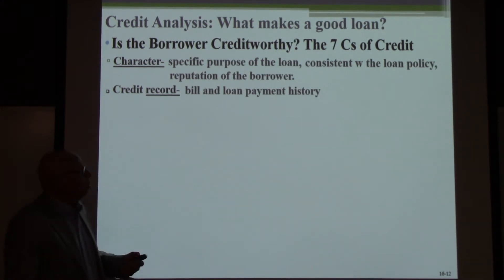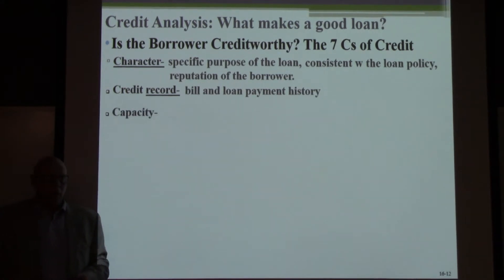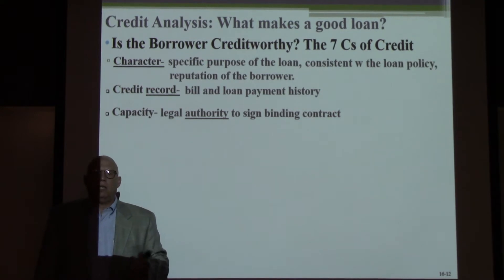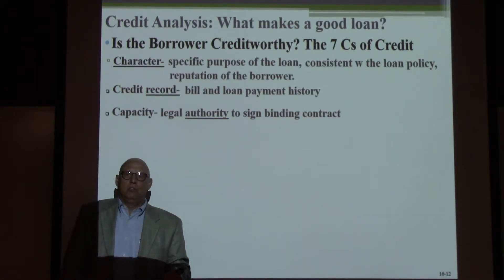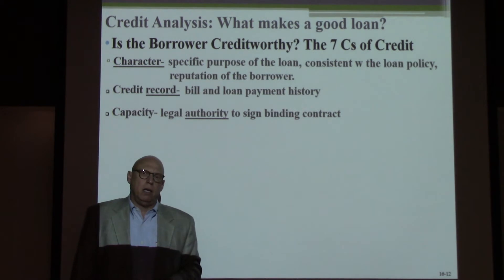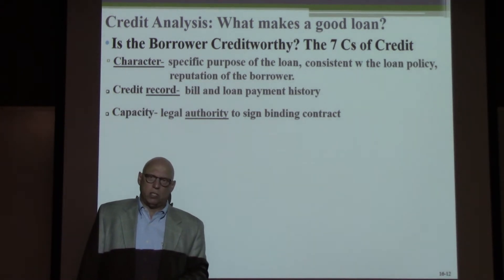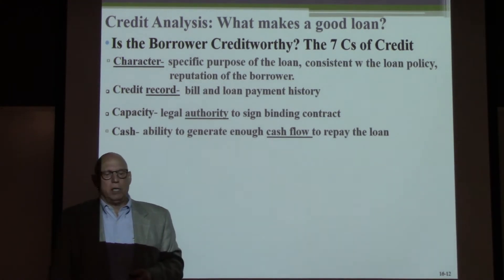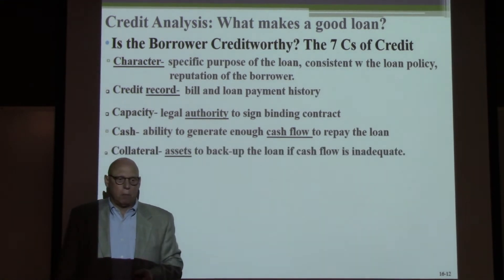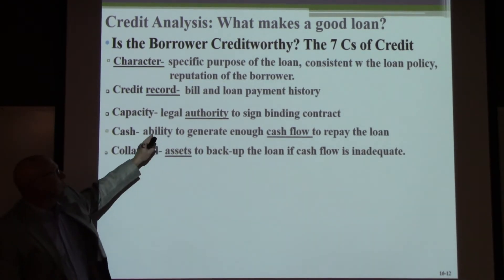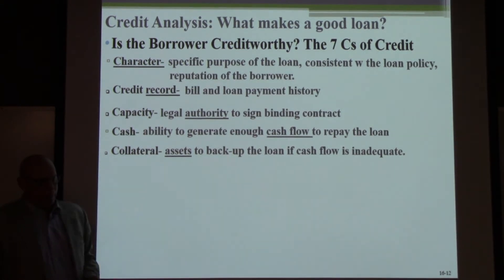You can pull their bill and loan payment history, and look at their credit score. Look at the capacity of the borrower — does the borrower have the legal authority to sign a binding contract? Before you cut a check to a person, you better make sure you know who that person is and that person has the authority on behalf of an organization to borrow money. Make sure the borrower generates enough cash flow to repay the loan, or that the borrower has good assets to back up the loan if cash flow is inadequate. You look first at cash flow, then at the collateral.